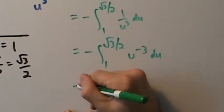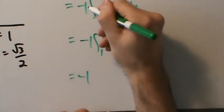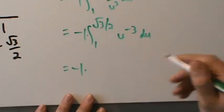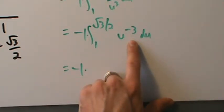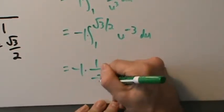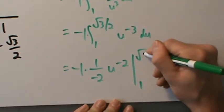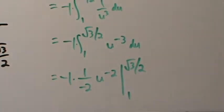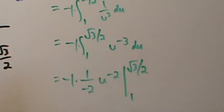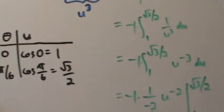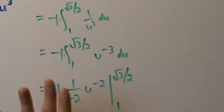Since it's a definite integral, we don't have to go back to theta. We can completely forget about theta because we already changed our limits of integration using that chart. That's really the ideal way to do it. The algebra here is going to be a little messy, but it won't be too bad. Negative 1 times 1 over negative 2 — the negatives cancel and that becomes 1 half. So what we have is 1 half times 1 over u squared, evaluated from 1 to root 3 over 2.